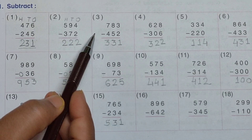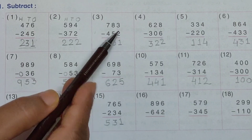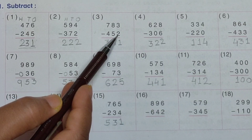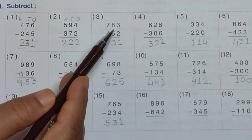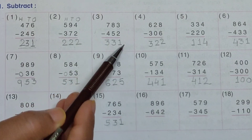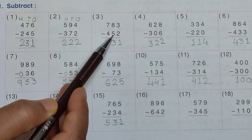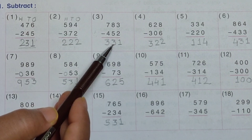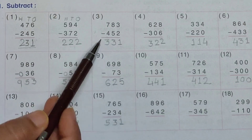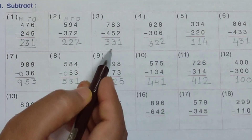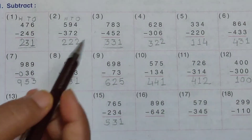Similarly, see the third one. Ones, tens and hundreds. Seven hundred and eighty-three minus four hundred and fifty-two. Ones place: three minus two equals one. Tens place: eight minus five equals three. Hundreds place: seven minus four equals three. Your answer is three hundred and thirty-one.